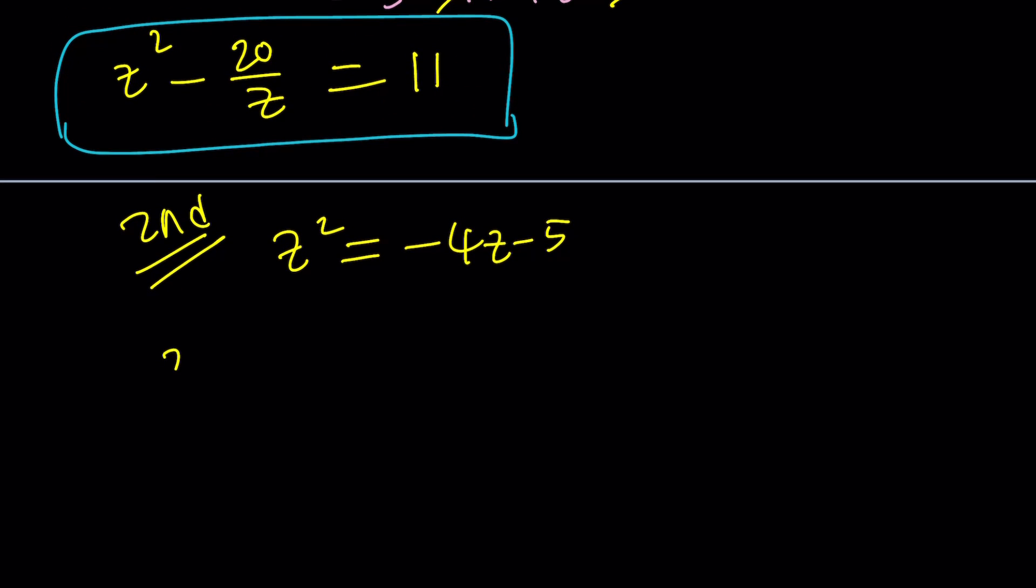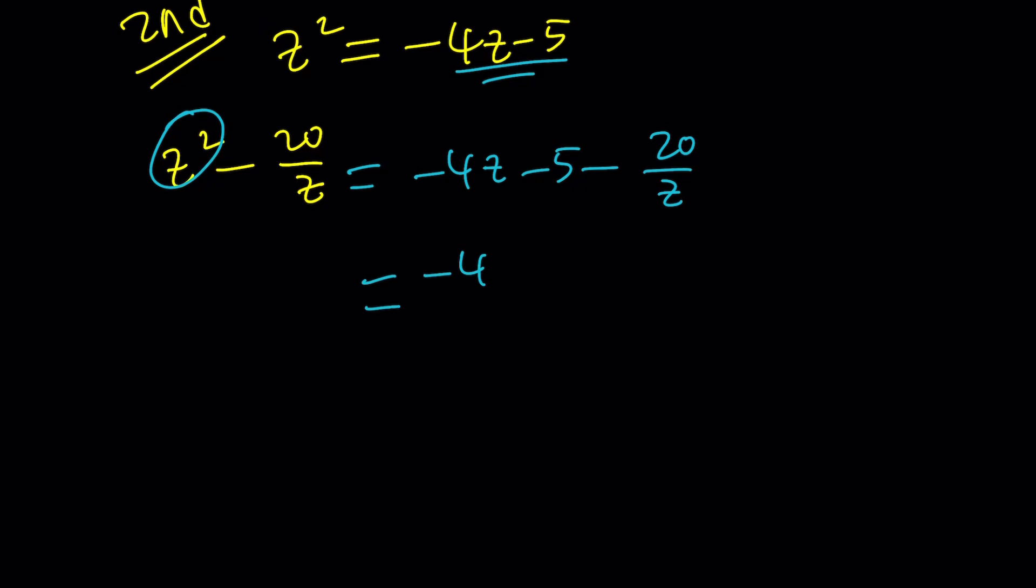Since we have z squared minus 20 over z, we're going to replace this z squared with that. Make sense? So it's going to be negative 4z minus 5 minus 20 over z. Everything is negative. If you wanted to take out a negative, you could. No big deal. But this will become negative 4z squared minus 5z minus 20 all over z.